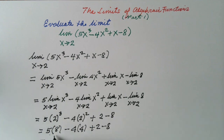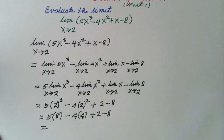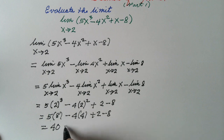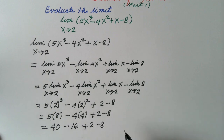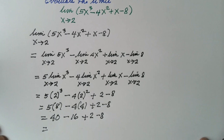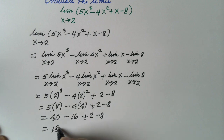5 times 8 is 40. This is equal to 40 minus 16 plus 2 minus 8, which equals 18.